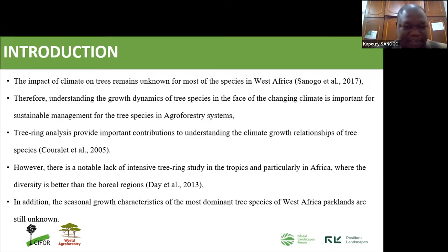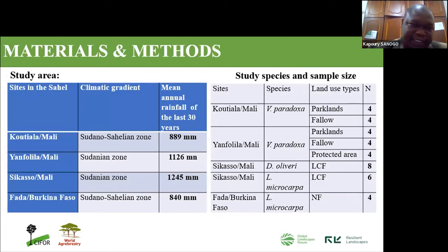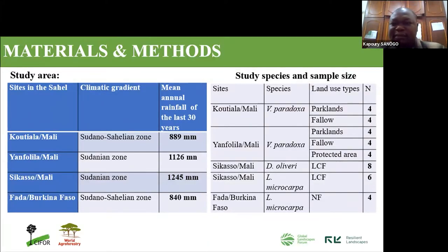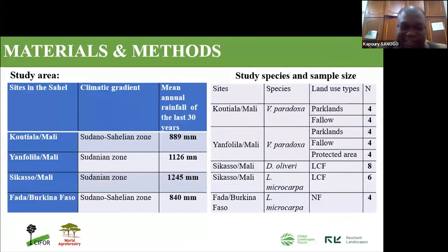In terms of materials and methods, we collected samples in different areas in Mali and Burkina Faso. The species we collected are Vitellaria paradoxa, Daniella oliveri, and Lannea microcarpa in Burkina and Mali. These three species are found across agroforestry parklands and support farmers.